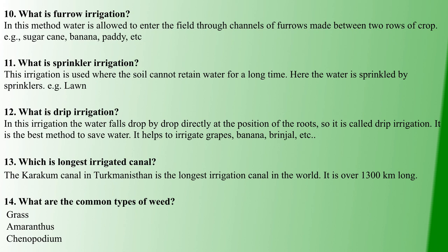The second modern method is Sprinkler irrigation. Sprinkler irrigation can be used in any soil. The water is spread evenly over the soil, covering the soil and the grass.